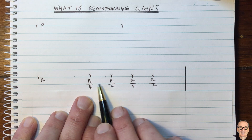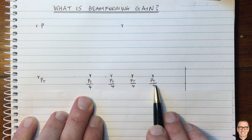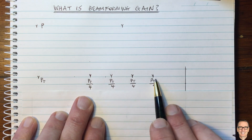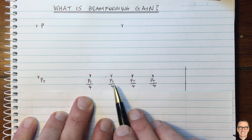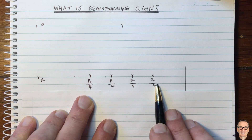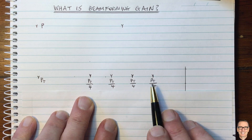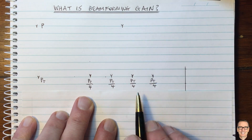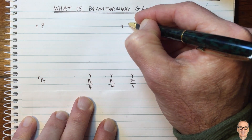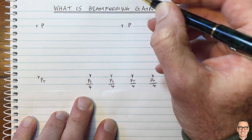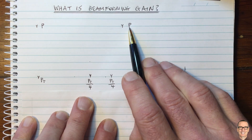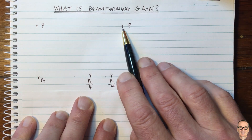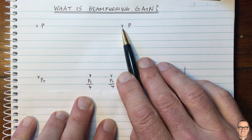And we might naively think that we've got four antennas, but they've got a quarter of the power each. So over the same distance, we might assume, naively, that we're going to still be receiving a receive power of P.